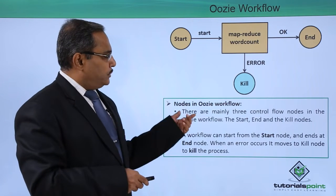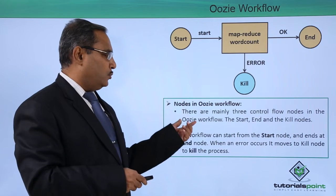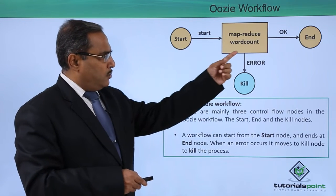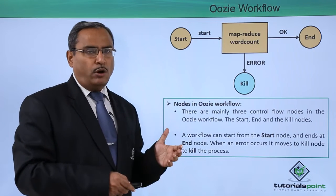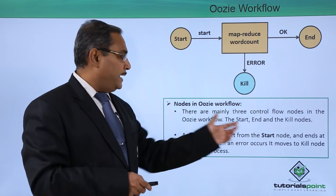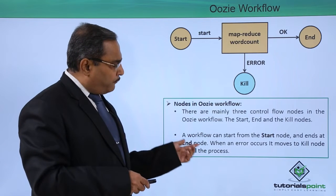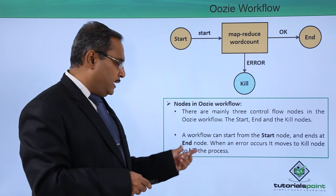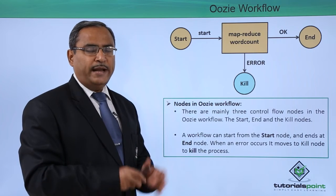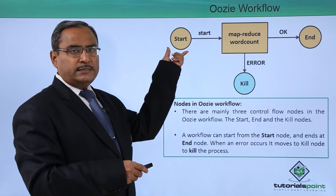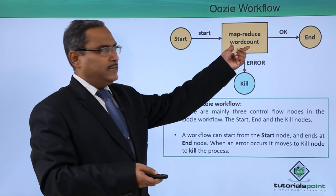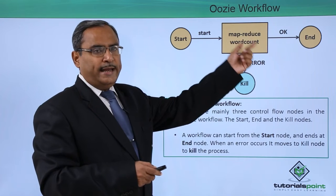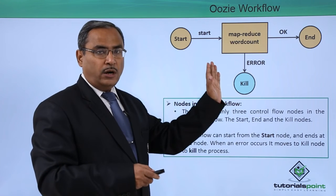Nodes in OZI workflow: there are mainly three control flow nodes in the OZI workflow and they are start, end, and the kill node. A workflow starts from the start node and ends at the end node, but when an error occurs it moves to the kill node to kill the process because the process has encountered an interruption. Here the MapReduce word count is the process to be executed. If it faces any kind of error then the kill node will be reached, otherwise it will go to the end if the processing completes successfully.